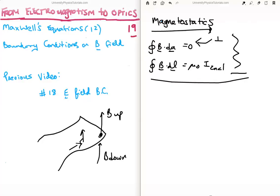Gauss's law is going to give us the perpendicular component, whereas Ampere's law is going to give us the parallel or tangential component.